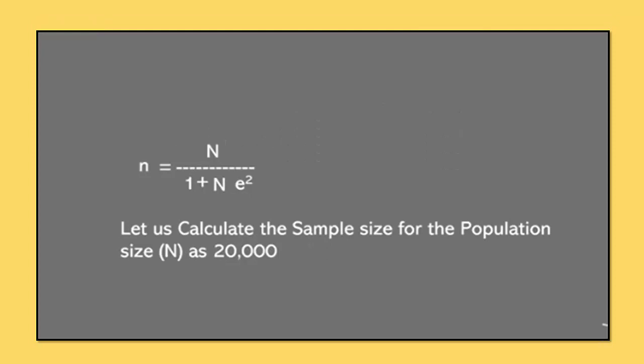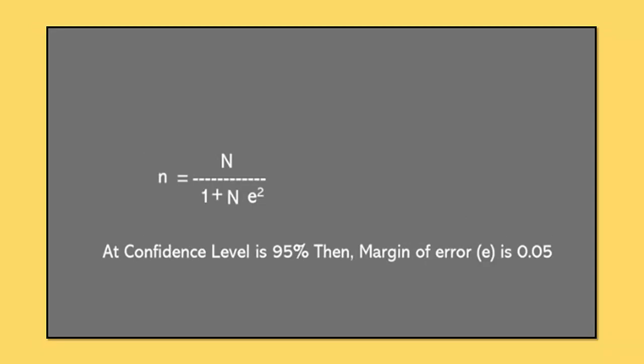Now let us calculate the sample size for the population that is N equals 20,000. Your confidence level is equal to 95% and your margin error is equal to 5%. Therefore, confidence level is 95%, margin error is 0.05 and population is 20,000.